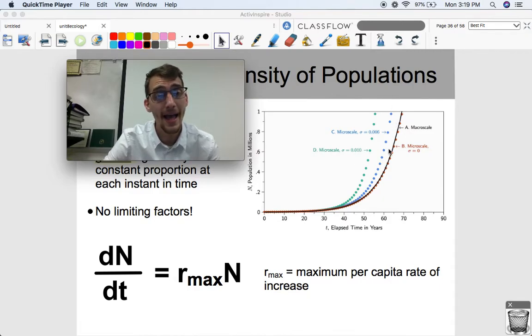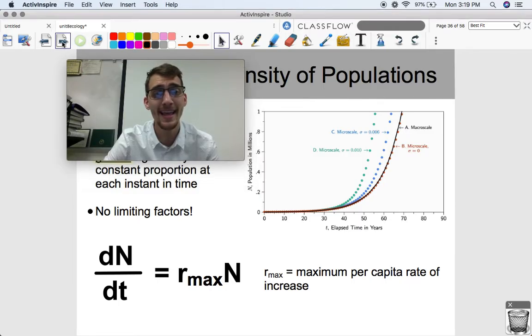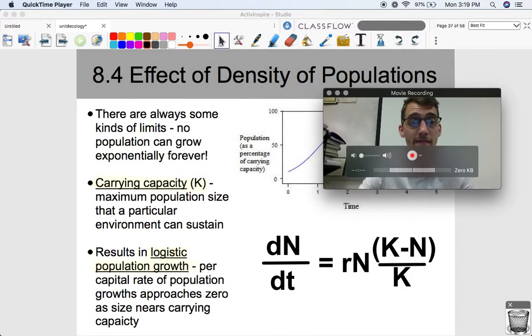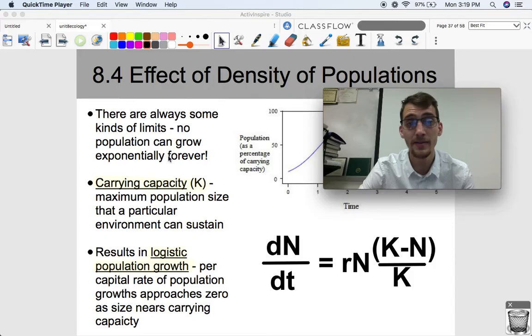It's not going to be a thing. Exponential growth, while it does happen, it's not sustainable. It cannot be continued because there is always some kind of limiting factor. There's always some kind of limit. No population can grow exponentially forever.